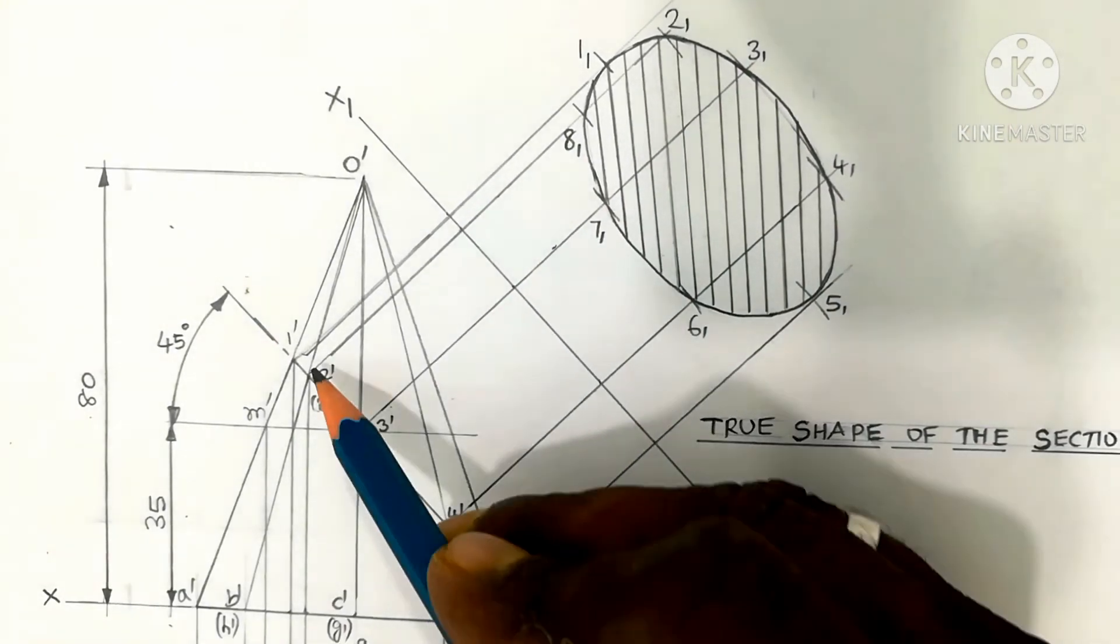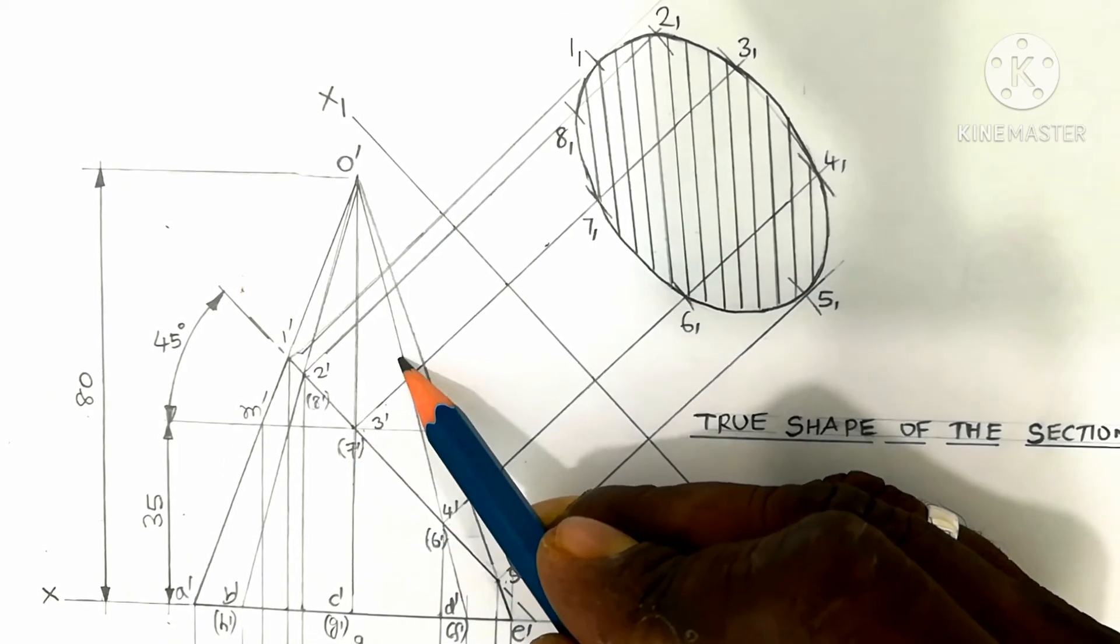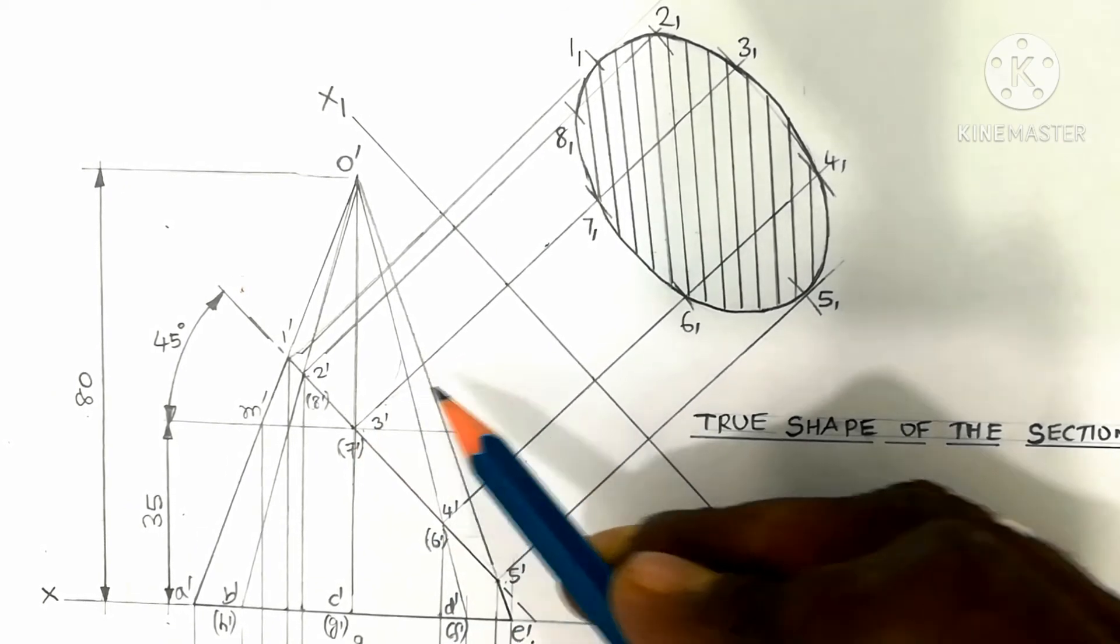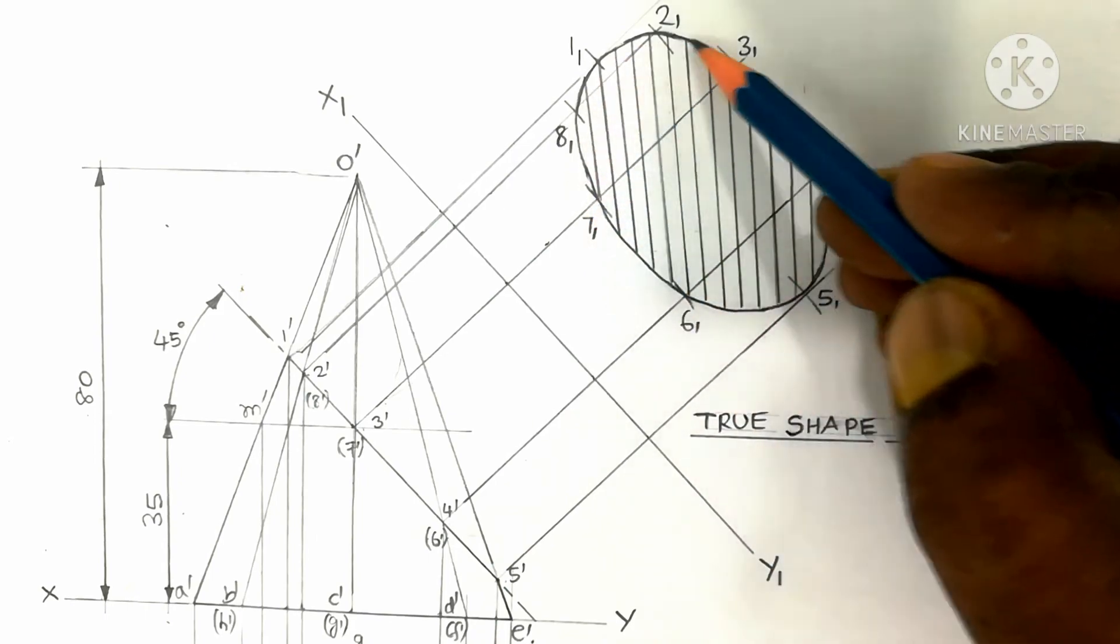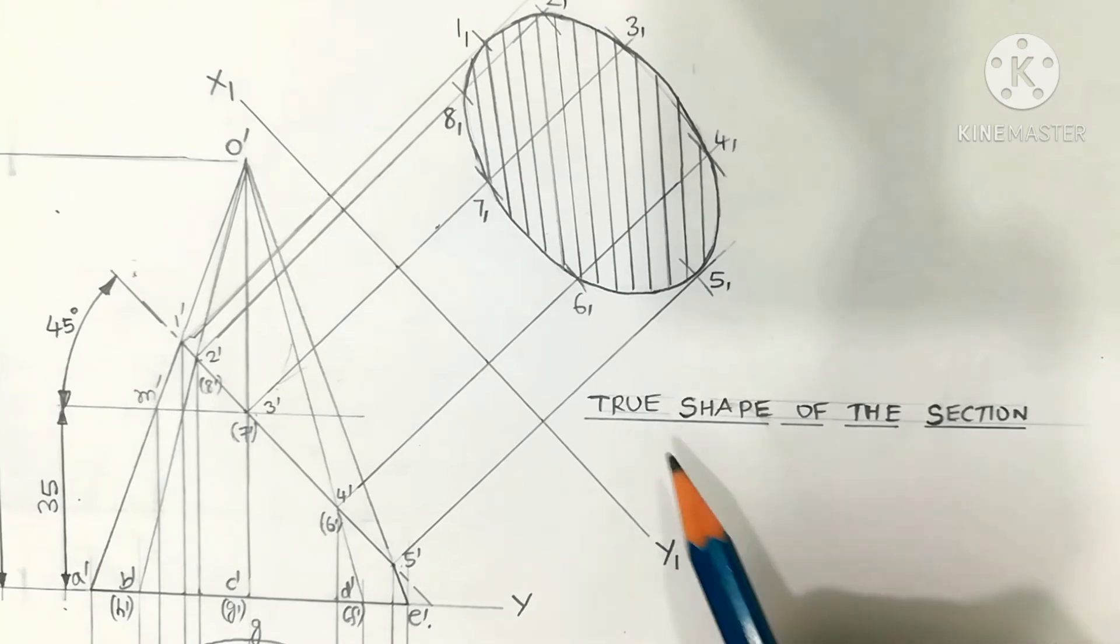When the cutting plane is located perpendicular to the cut surface, the section obtained is called the true shape of the section, seen as an ellipse. This is written here: true shape of the section is an ellipse.